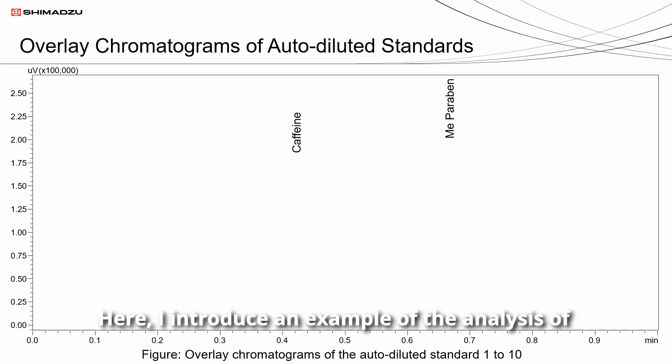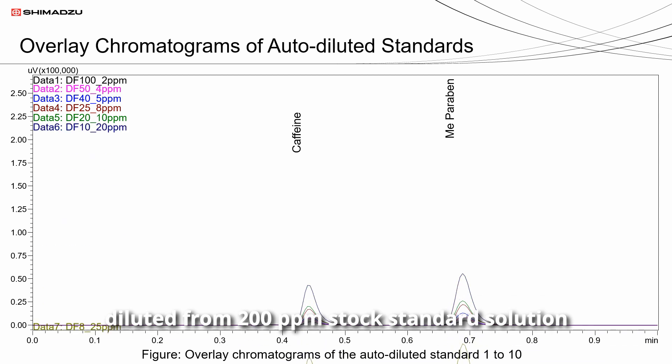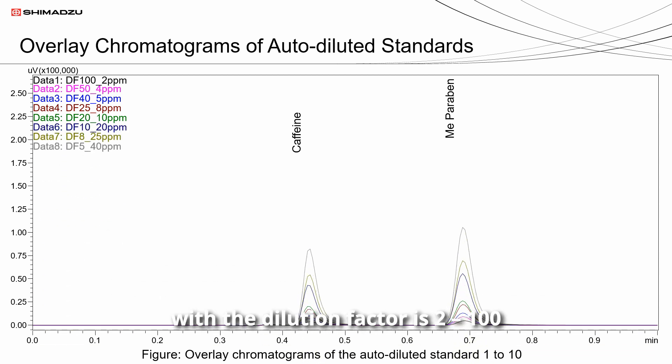Here I introduce an example of the analysis of caffeine and methylparaben using the auto dilution pre-treatment function. The figure shows the overlay chromatogram of the auto-diluted standards 1 to 10, diluted from 200 ppm stock standard solution with the dilution factor of 2 to 100.